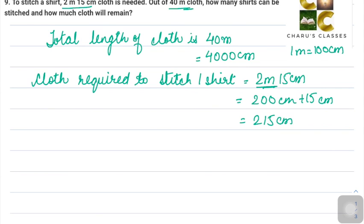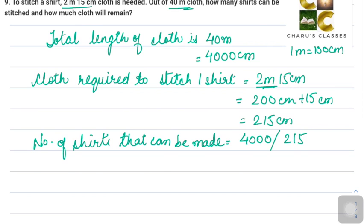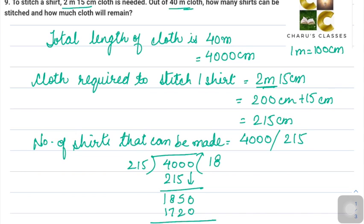So how many shirts can be stitched? We can find out by dividing 4000 by 215. So number of shirts that can be made is 4000 divided by 215. 215 ones are 215, so we have 185 and this 0 comes down. So we have 185 and the remainder is 130.